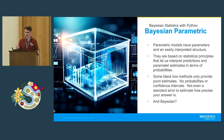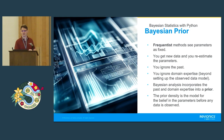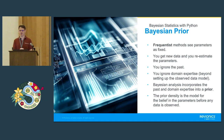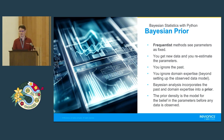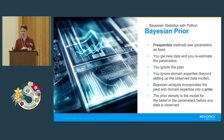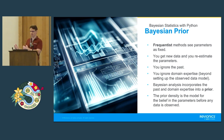Bayesian takes that parametric framework and does some extra things with it. In contrast to Bayesian, you have frequentist methods, which see parameters as just fixed values. You get new data and re-estimate the parameters, ignoring the past and whatever domain expertise you actually had. Bayesian analysis can incorporate that past knowledge and domain expertise into a prior. The prior density is our model for that early prior belief in the parameters we're estimating, and this is defined before any data is observed.